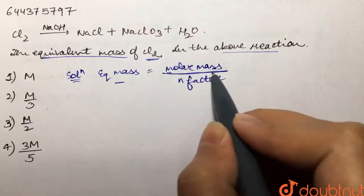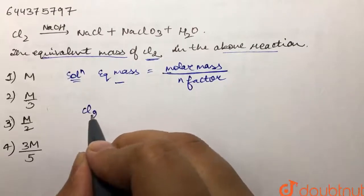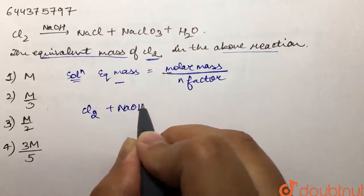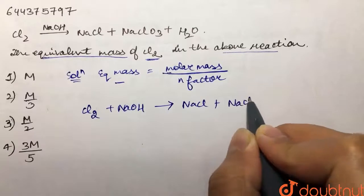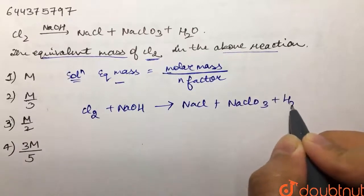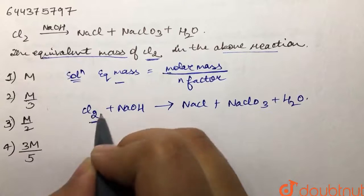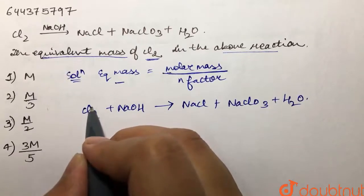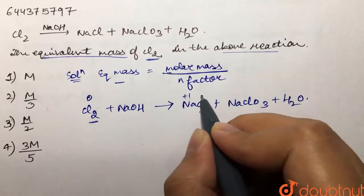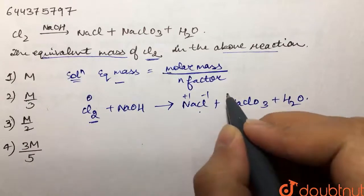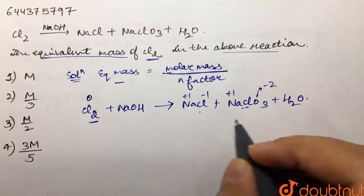We write the reaction: Cl₂ with NaOH forms NaCl, NaClO₃, and water. We are only concerned with chlorine. In Cl₂, chlorine is in elemental state so it has an oxidation state of 0. In NaCl, sodium is +1 so chlorine is -1.